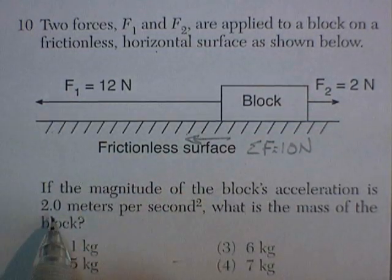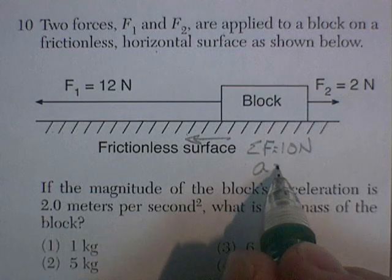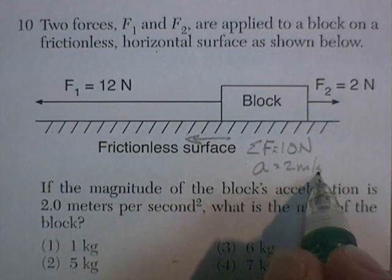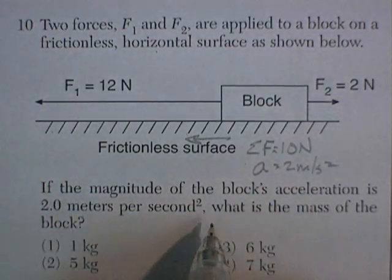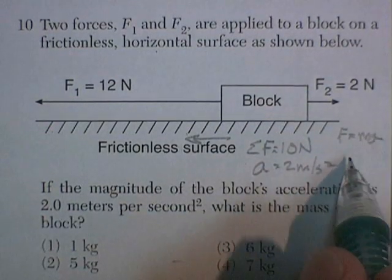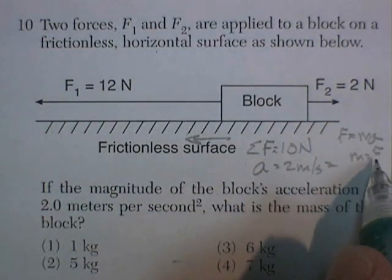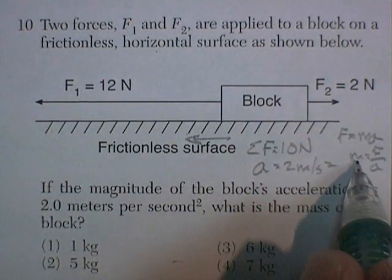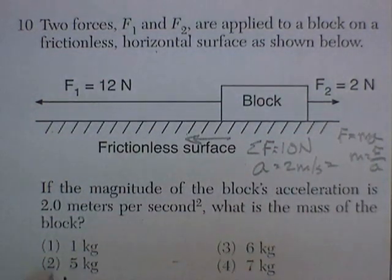If the magnitude of the block's acceleration is 2 meters per second squared, what is the mass of the block? Well, F equals MA, M equals F divided by A, 10 newtons, 2 meters per second squared. The mass ought to be about 5 kilograms.